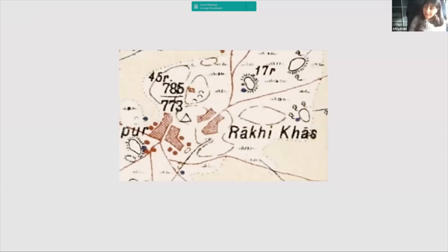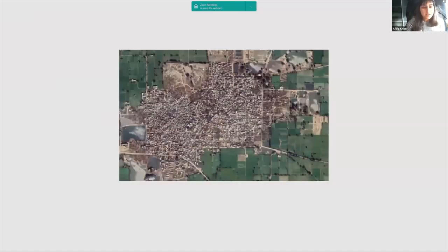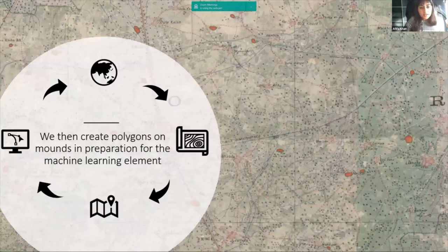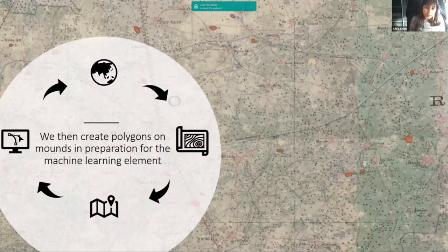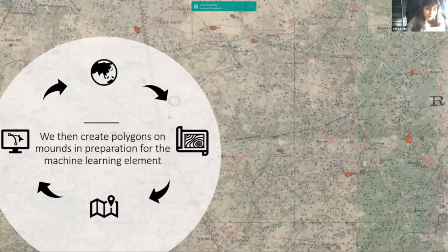The example of Rakhigarhi shows the modern satellite image overlapping quite nicely with the historic map — you can see the archaeological site and then the modern town. After the sites have been identified — mainly the mounds — we create polygons over them. This data will be sent to our collaborators Hector and Ebon, who will put it through machine learning processes so that we don't have to manually identify all of these sites, hopefully rapidly speeding up the process.